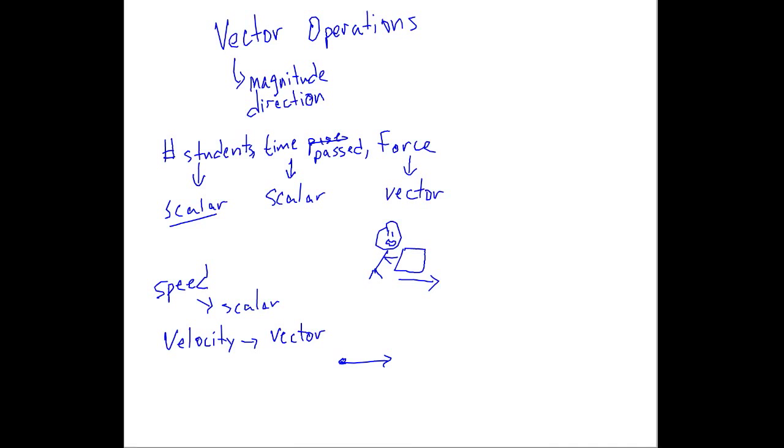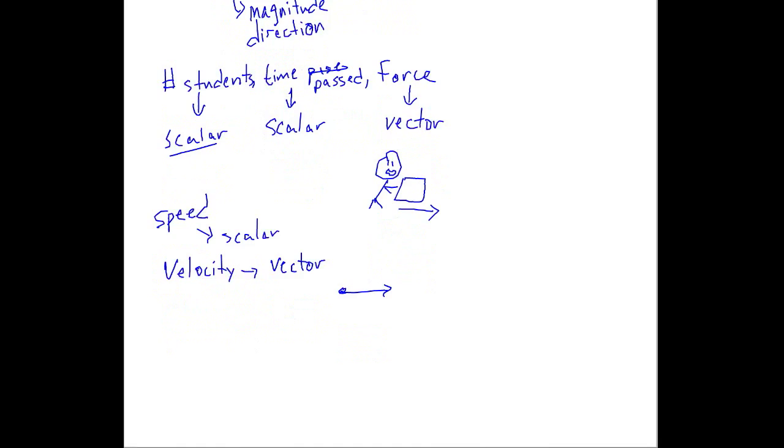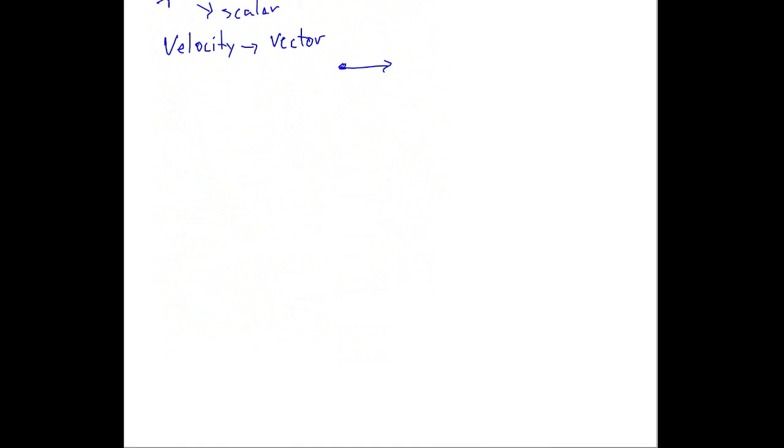So vectors. They're usually denoted with a little harpoon hook above a letter. So like you have vector A and you could have vector B. And so sometimes what you have to do is you have to add vectors, or subtract them, or multiply them, so on and so forth. So to do that, we're going to use something that is the head-to-tail method.